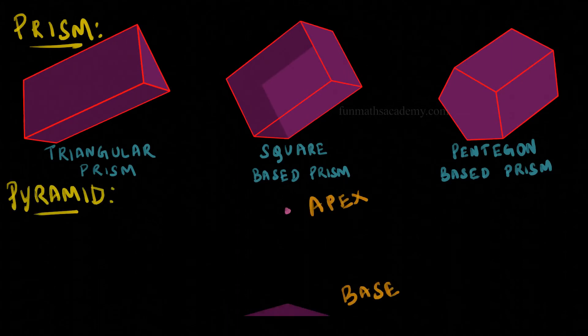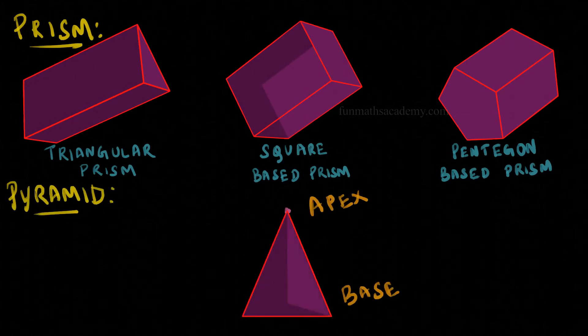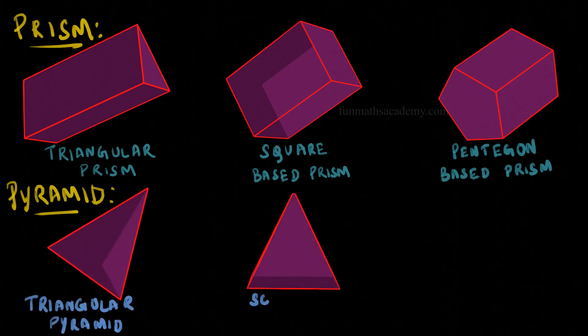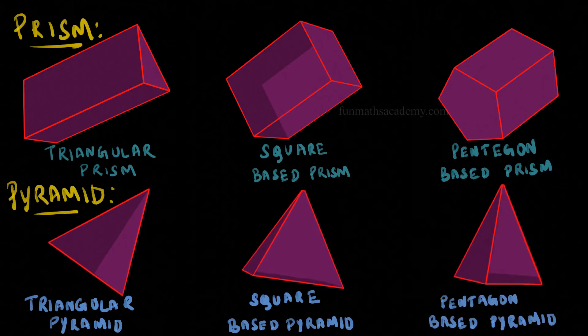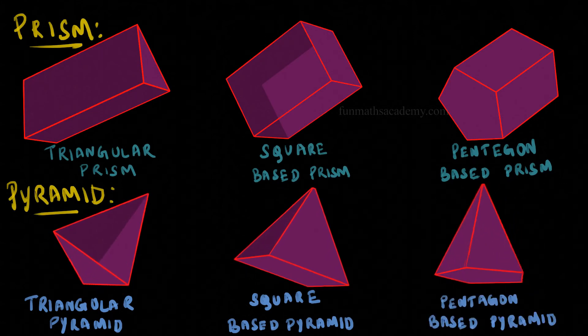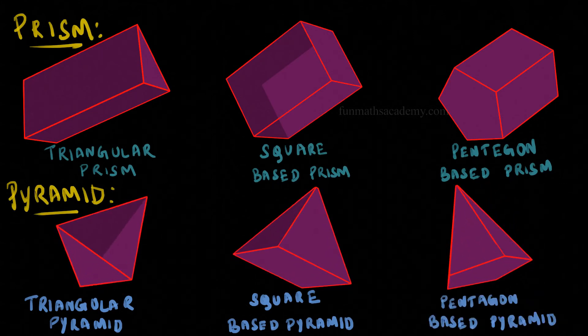A polyhedron created by connecting a base and an apex, that is a point, is called a pyramid. Just like prisms, there are many types of pyramids too. Some of them are triangular pyramids, square-based pyramids, and pentagon-based pyramids.